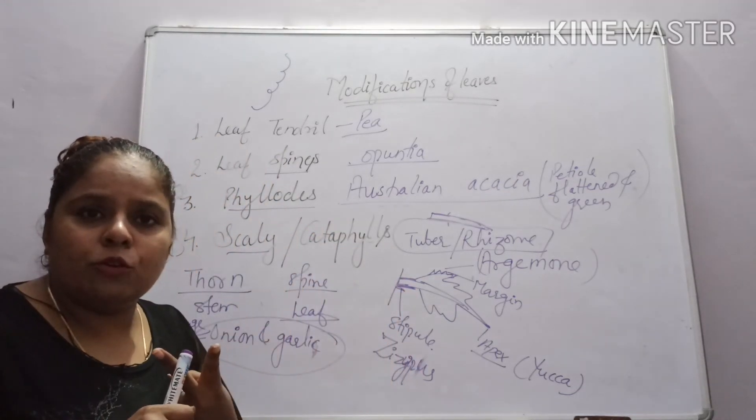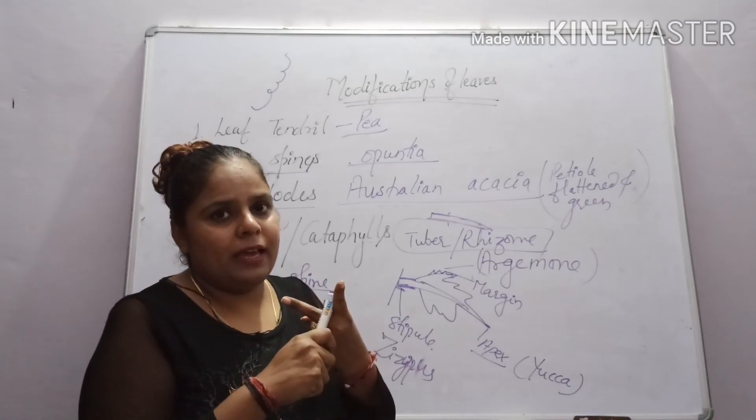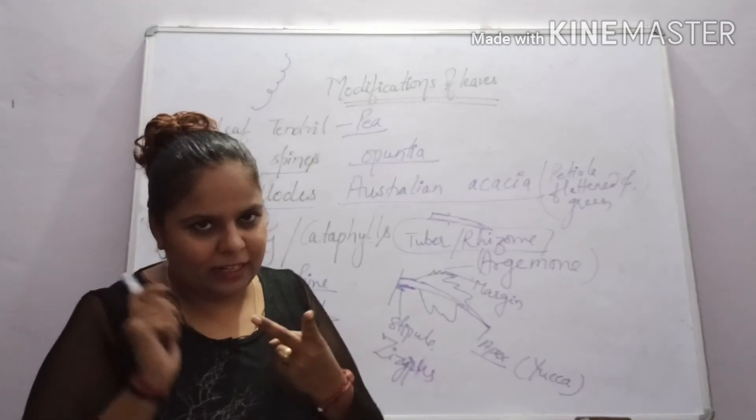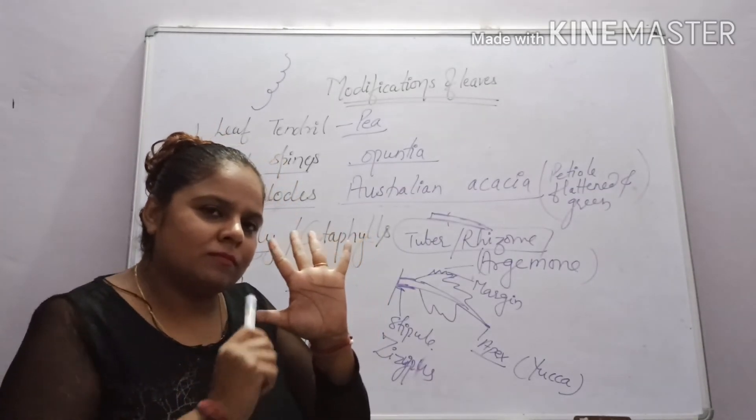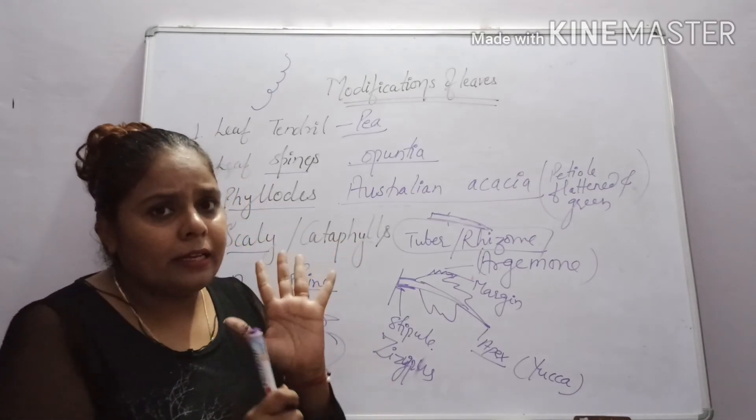Now compound leaf is two types. If it is on the axis, then it is pinnately. And if it is on the point, then it is palmately. Clear?